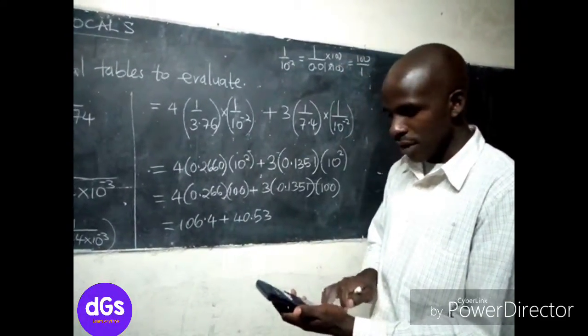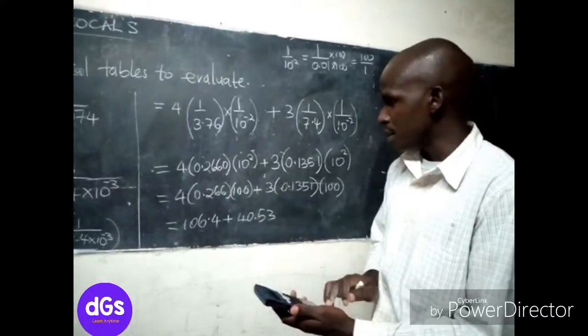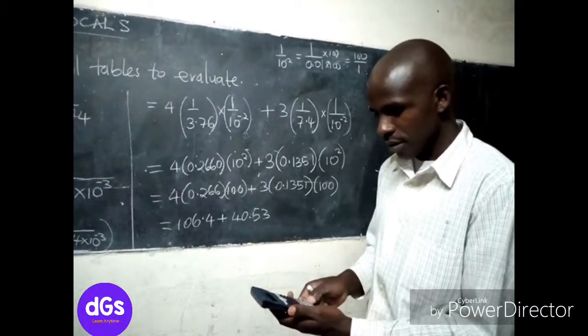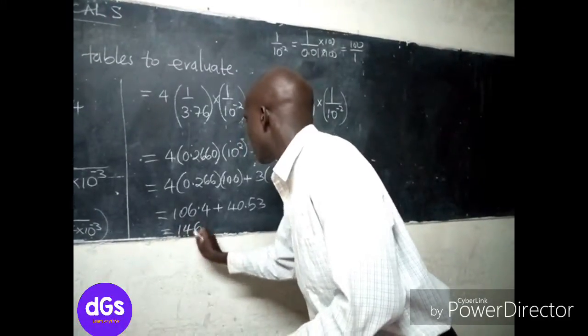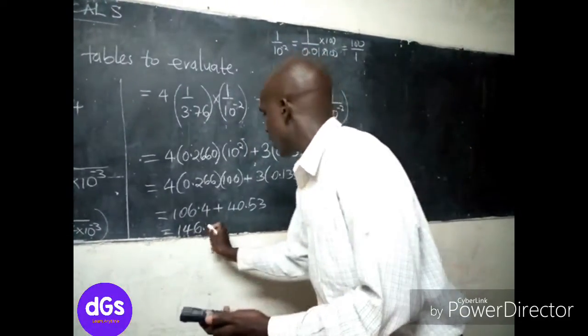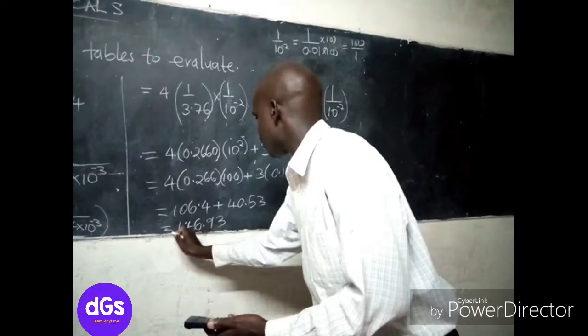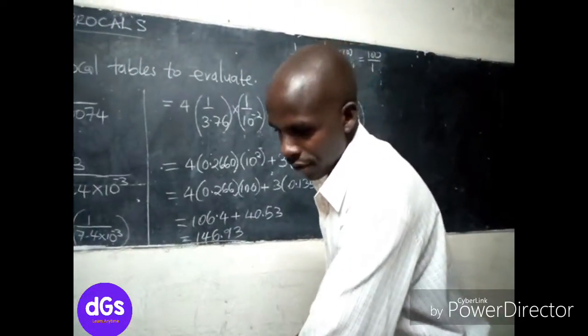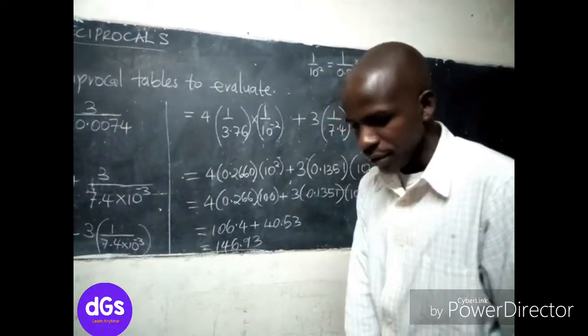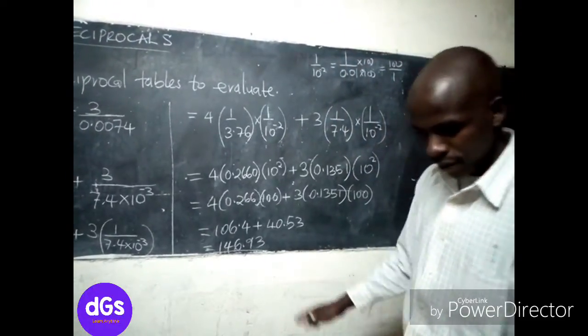So once you now finally add the two, this will give us 106.4. We are getting 146.93.